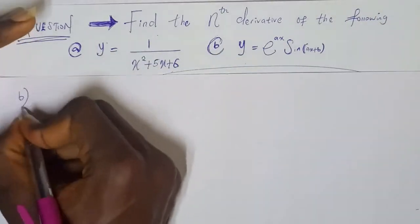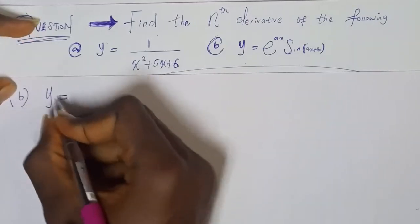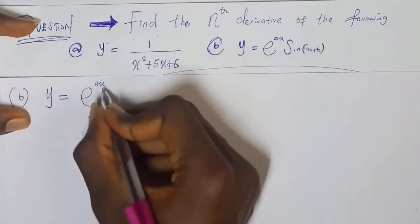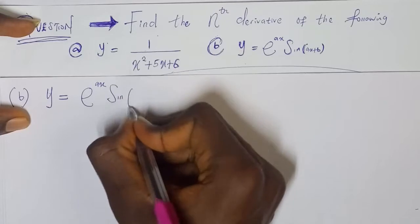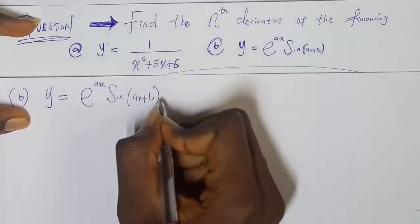The second question here says that we need to find the nth derivative for this function: y = e^(ax) * sin(ax + b). So, here is the question.